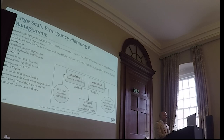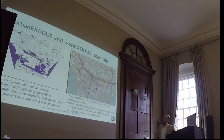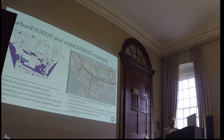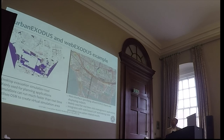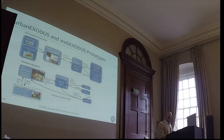On the left-hand side we see the Urban Exodus simulation, and on the right-hand side we see the Web Exodus simulation. One of the key differences is the map background in Web Exodus, which makes it easy to visualize the evacuation simulation data. This is the evacuation of the Kennedy Wharf area consisting of about 15,000 agents, represented by blue dots, evacuating to the north.